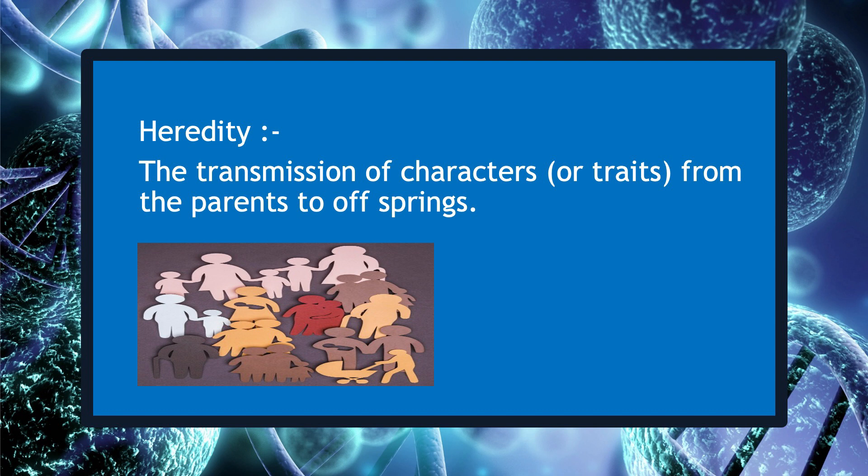As you know about the reproductive process in different organisms, like other life processes, the reproductive process gives rise to new individuals that are similar but subtly different. The passage or transmission of characters from parents to offspring is known as inheritance or heredity. Let us discuss Mendel's observation of the di-hybrid cross.